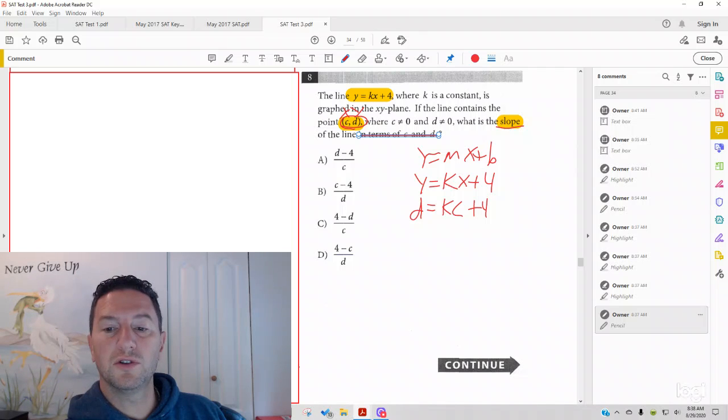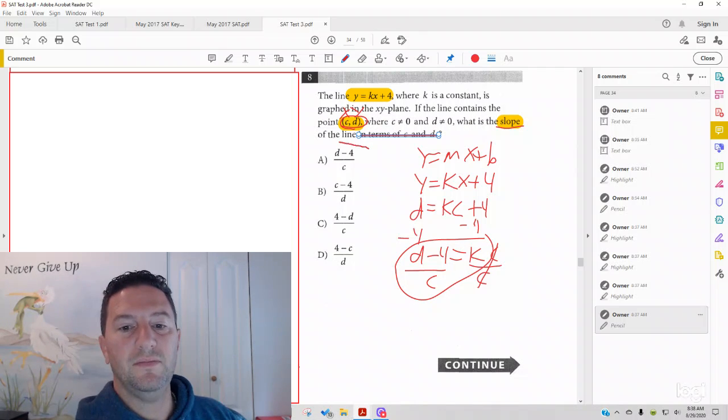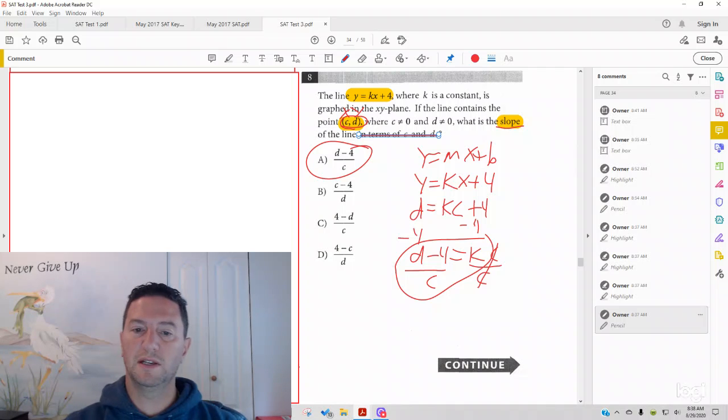What do you have to do to both sides first? You have to subtract 4. Minus 4, minus 4. And you wind up with d minus 4 equals kc. And, we said we're getting the k alone. Divide c, divide c. Cancel. k equals d minus 4 over c. And you get the answer choice of a is your correct answer there.